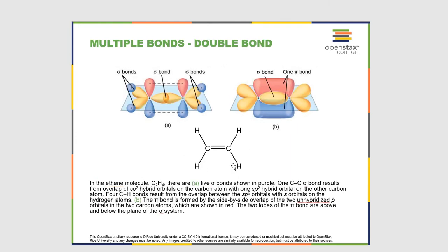Looking at the previous example, this is an sp2 hybridized carbon with three domains, and the H-C-H bond angle, as we discussed, is 120 degrees. So the shape and the hybridization go together.